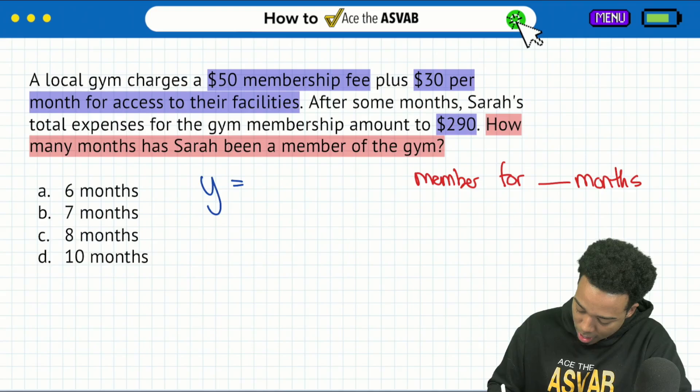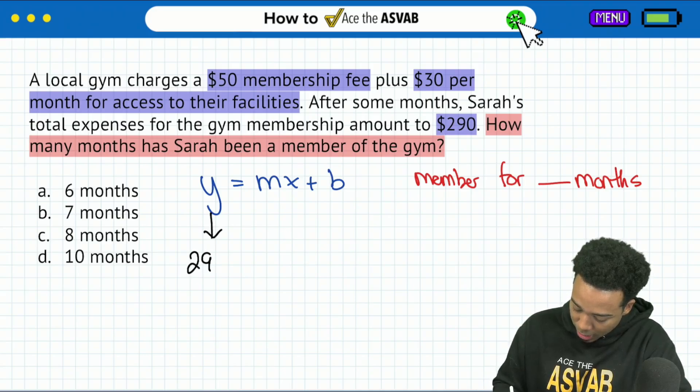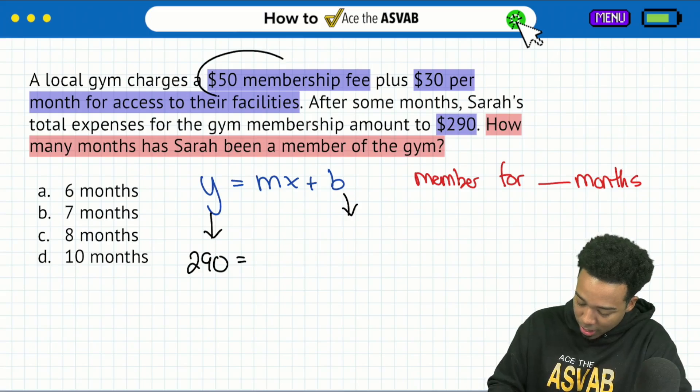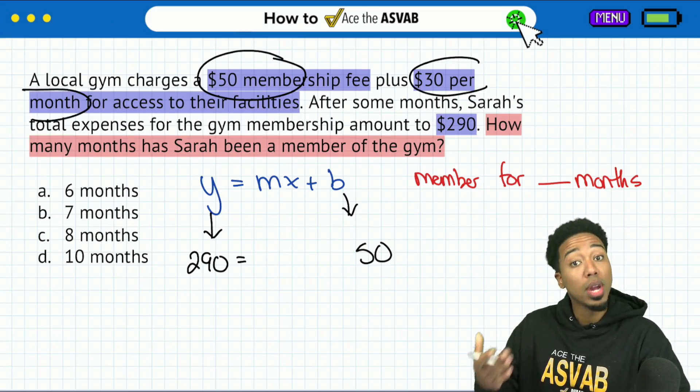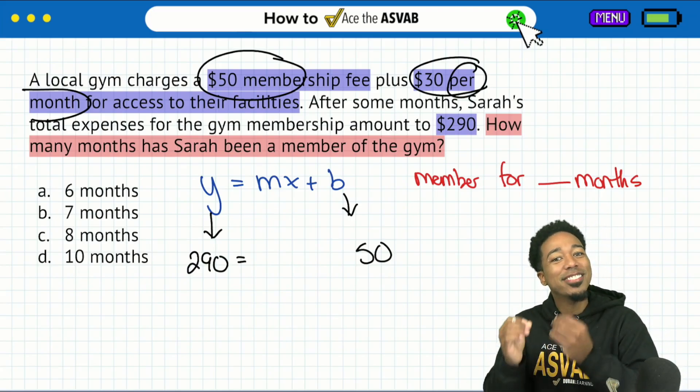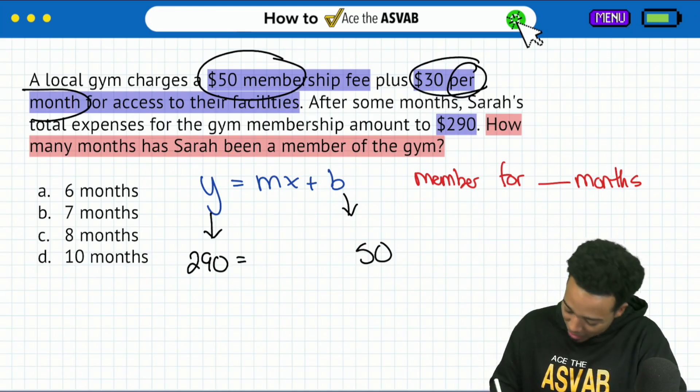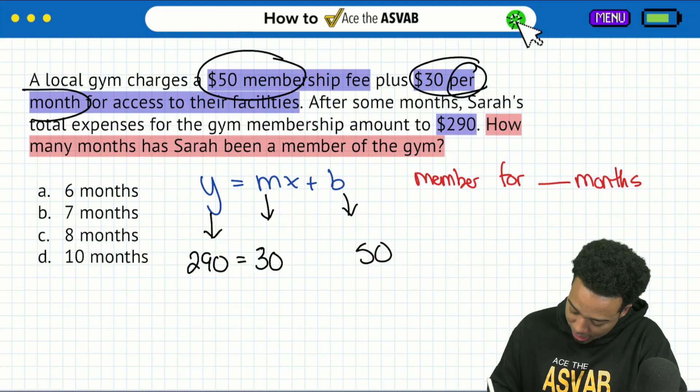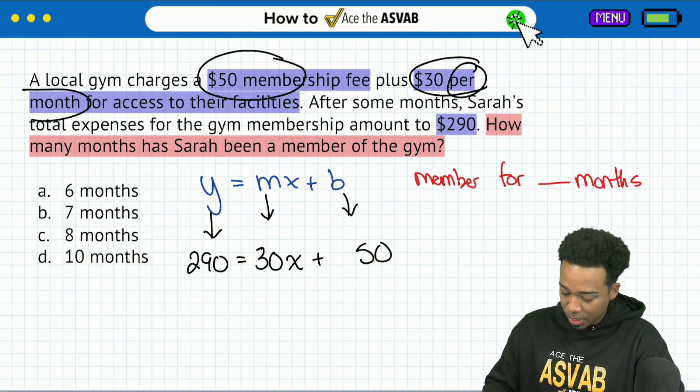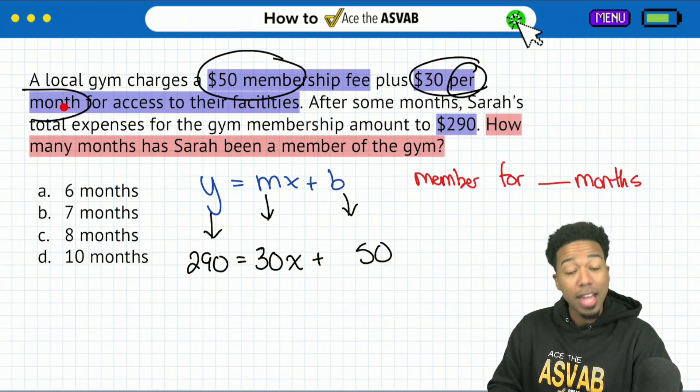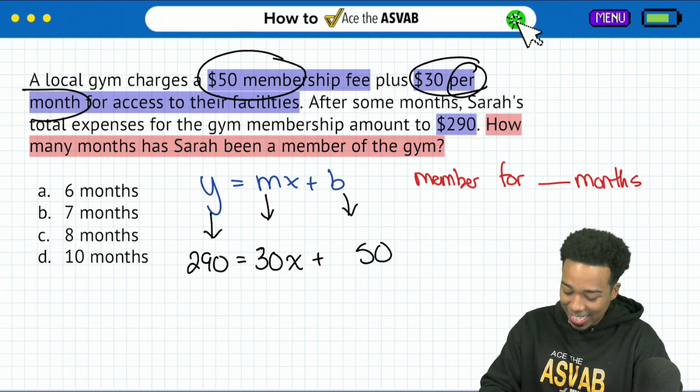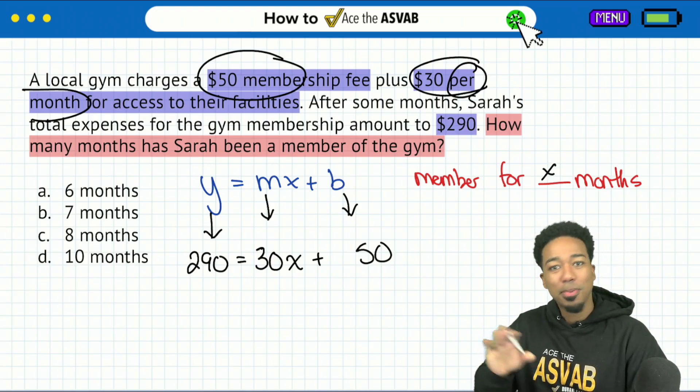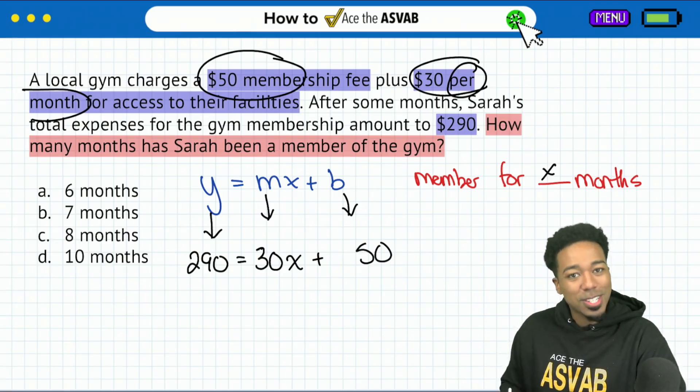But here we go. Hopefully they gave you enough time to pause the video so we can try this next one out. But watch this. How many months has Sarah been a member of the gym? Okay. So we'll just say right here: member for blank months. Nice and easy. Next up, I'm going to collect my information. Pretty smoothly here. Watch this. $50 membership fee. And then it says $30 per month to access the facilities. So it sounds like you got to pay 50 bucks to go ahead and begin the membership. Then you pay $30 every month for access. And then after some months, so we're looking for the number of months, the total amount is 290.